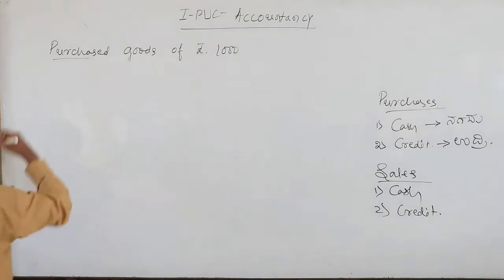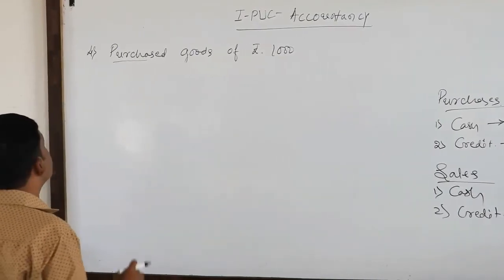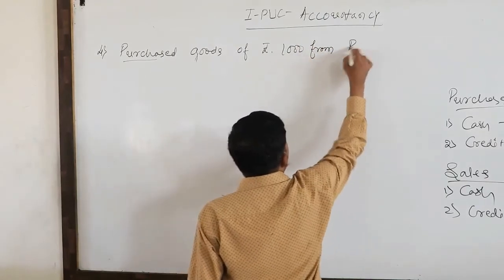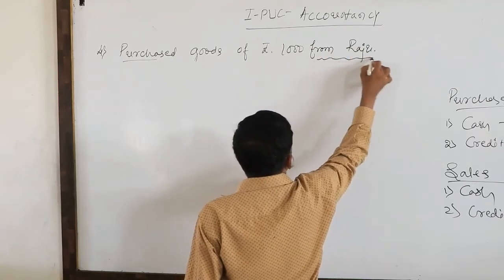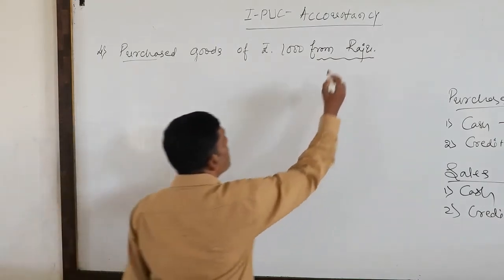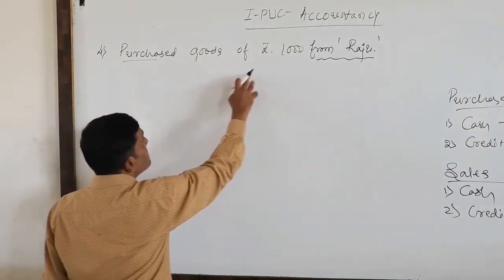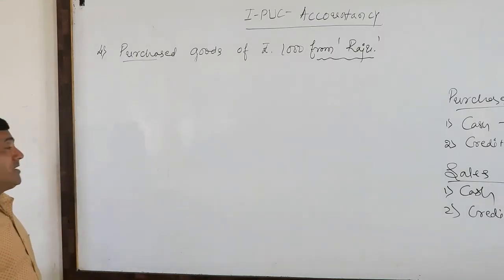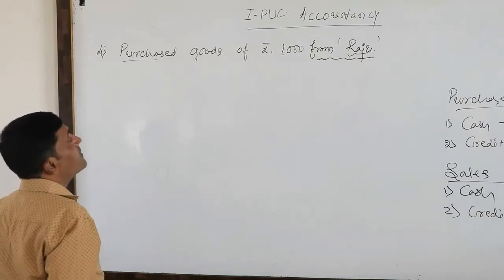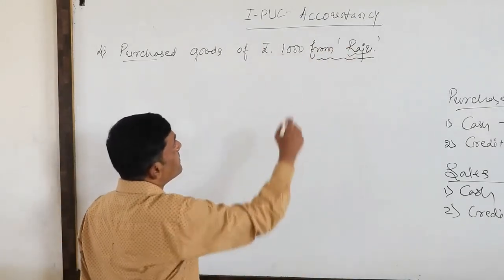The fourth example: purchased goods of rupees 1,000 from Raju. Here new information is added — the person who sold to us is mentioned. Purchased goods of rupees 1,000 from Raju. They have mentioned the name of the seller, so this is to be treated as a credit purchase. In a credit purchase, the seller's name is written in our books of account.